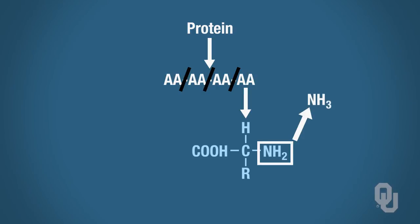What ends up happening is that we cleave off this NH2 group, which becomes ammonia. That goes off to the liver, and then the liver converts ammonia into urea. Ammonia is toxic, so you want to convert it into urea.